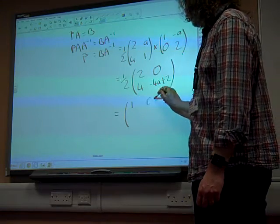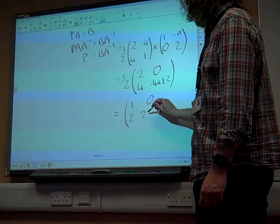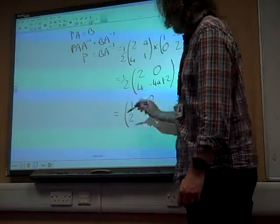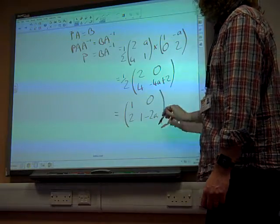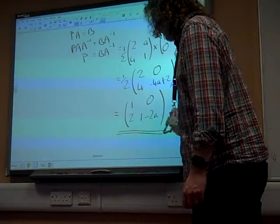So we have 1, 0, 2, and then that's 1 minus 2A, isn't it? That's a nice way of writing. There we go. And that is the matrix P.